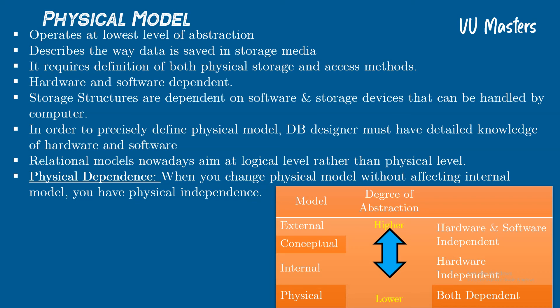To summarize, the physical model is the lowest level of abstraction. It deals with storage media, access methods, and how data is stored. It is dependent on hardware and software — specifically the operating system and database management system — which in turn depend on the underlying hardware and storage devices. Previous data models like network or hierarchical models had more hardware/software dependency, but relational data models have largely abstracted that away.